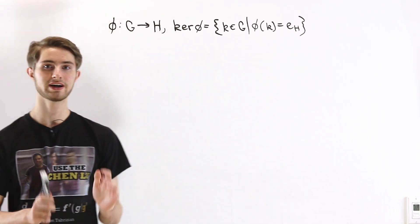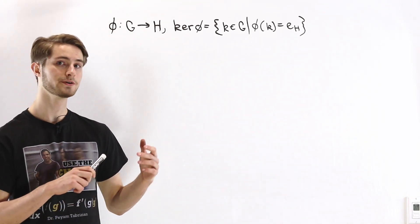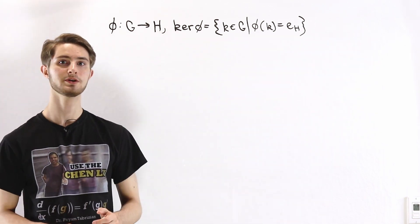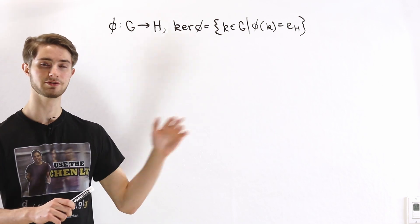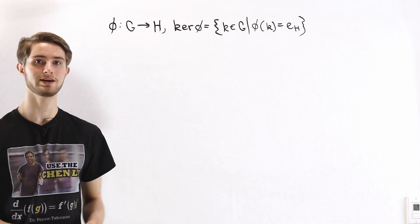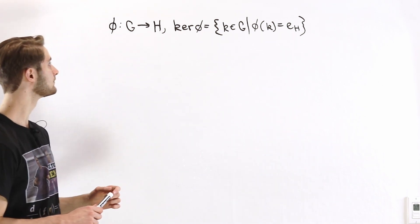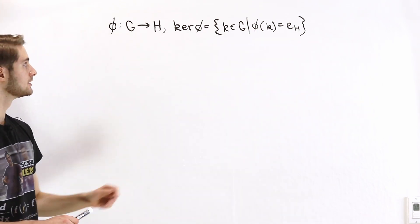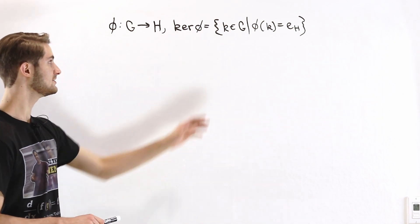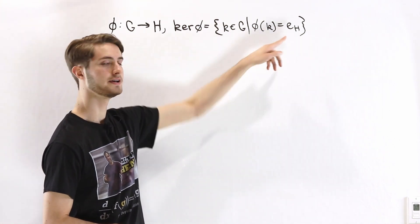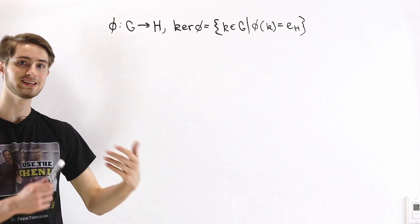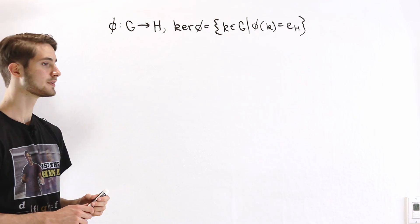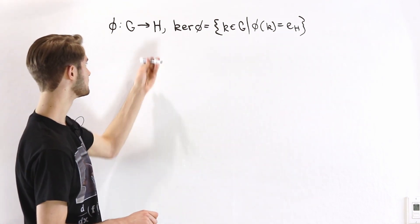We're going to talk about the first isomorphism theorem. We'll start by looking at some properties of the kernel of a homomorphism. If you're already familiar with the basic properties of the kernel, you can skip to the timestamp in the description. If we have a homomorphism going from a group G to a group H, the kernel is the set of elements mapped to the identity by this homomorphism.